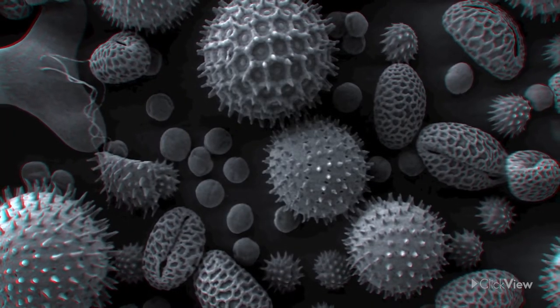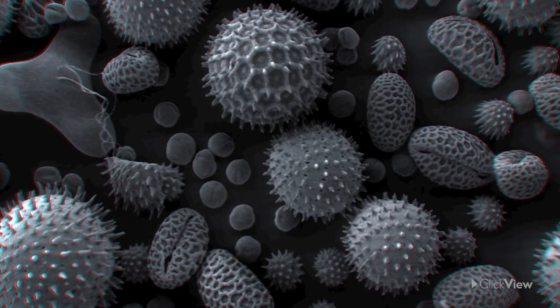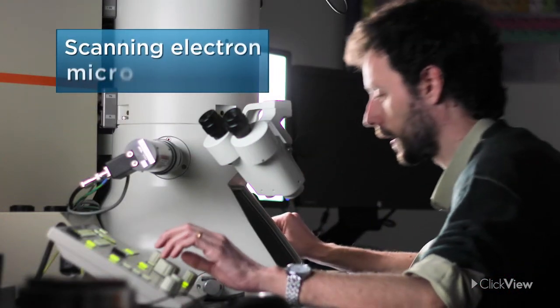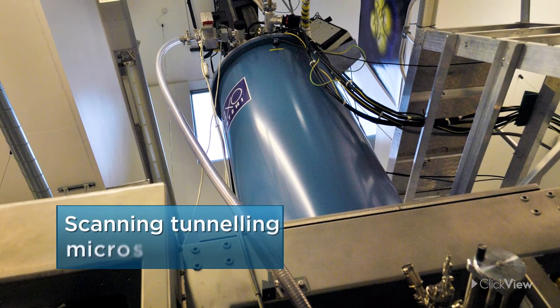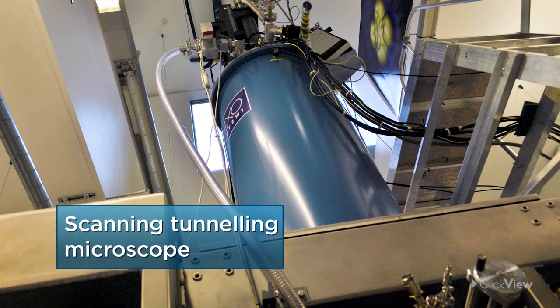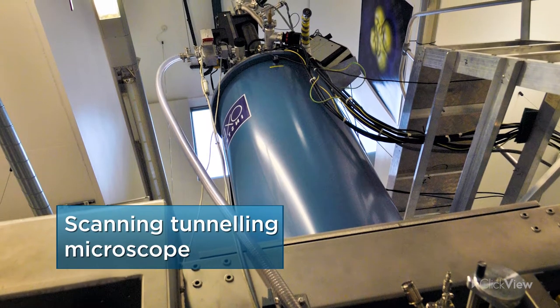For detailed images of things just a few micrometres in size you might need a powerful electron microscope. To detect anything on the scale of nanometres scientists often use devices so sensitive they can feel the tiny bumps of their atoms.